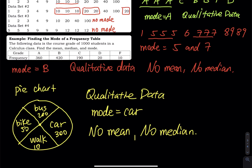For quantitative data, we can always find the mean and median — they are always available. But mode is not always available: if there is no repeating entry, then there is no mode. That will be all for this video. If you find it helpful, please subscribe, like, and share.